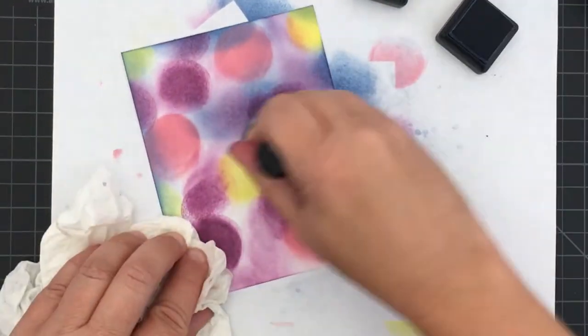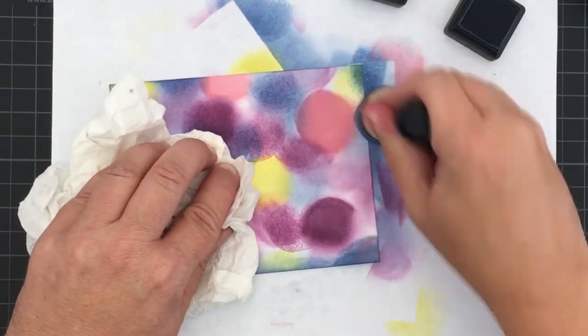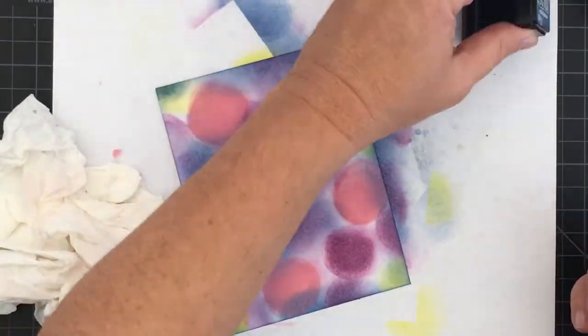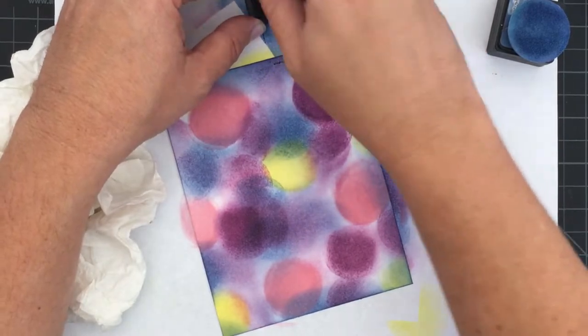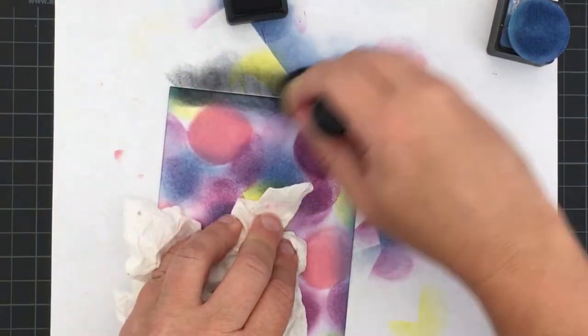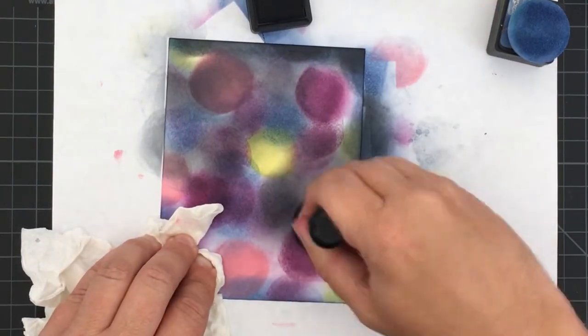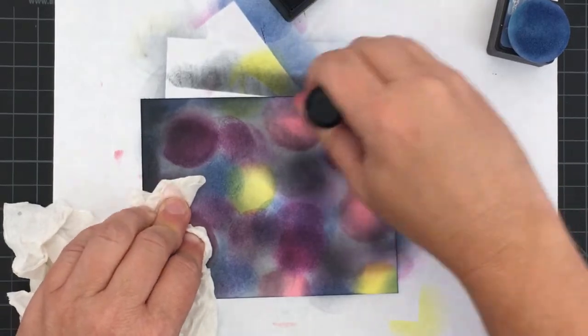I'm going to bring that in on the edges there and just a little bit in the middle to tone down some of those colors. Then once I like the way the Faded Jeans is, I'm going to switch over to some Black Soot and work those from the edges and throughout the project, and it slowly starts to come together.